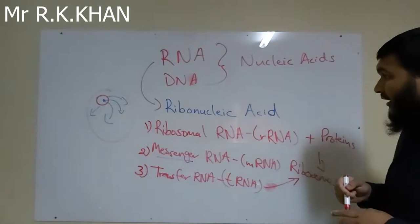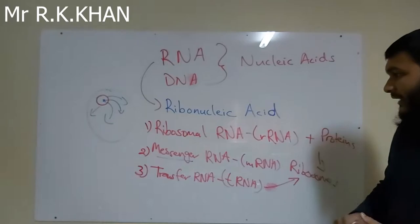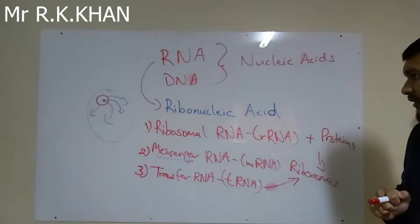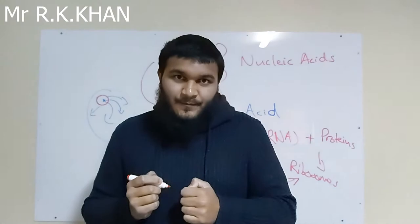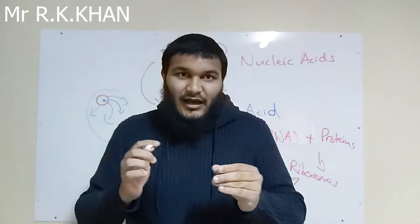To recap, the three types of RNA are: number one, ribosomal RNA; number two, messenger RNA; and number three, transfer RNA. Now I'm going to draw a table and discuss the differences between DNA and RNA.